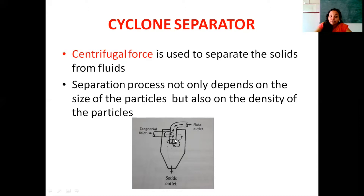Because of that, centrifugal force and a vortex are formed inside the separator. The solids present in the air stream are thrown against the wall of the cyclone separator. As the air velocity diminishes, the solid particles settle at the bottom of the conical base, and we can collect those solid particles through the solid outlet.